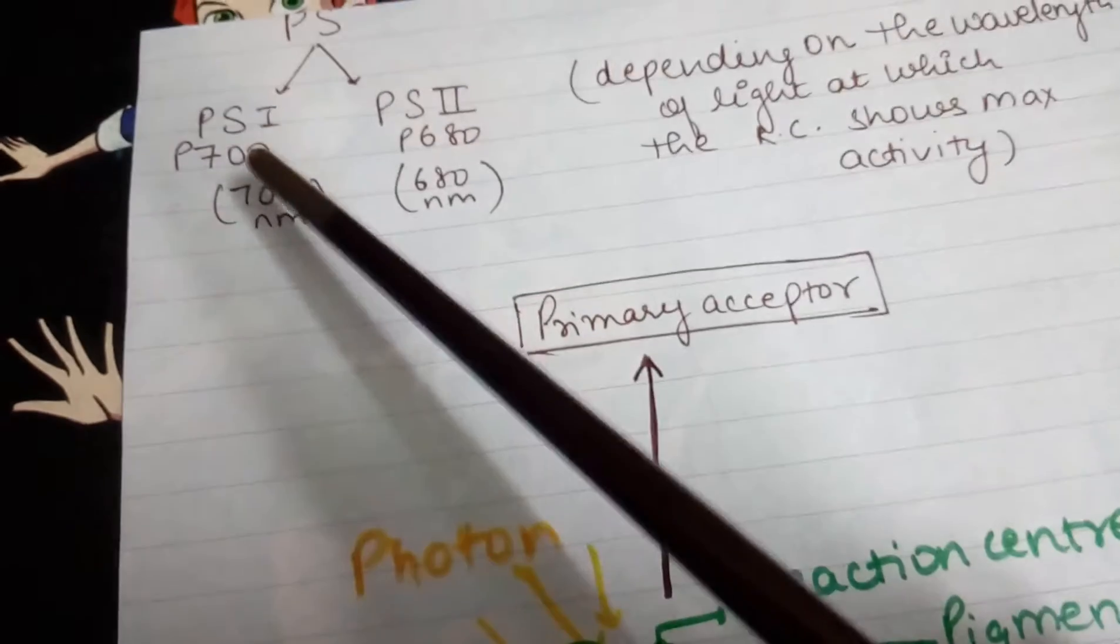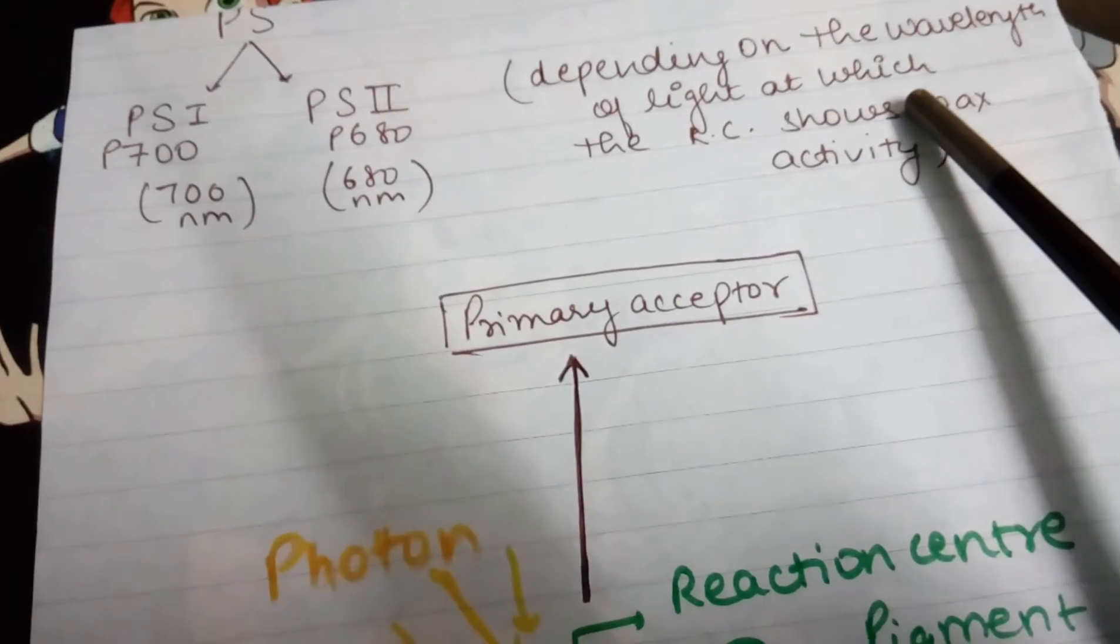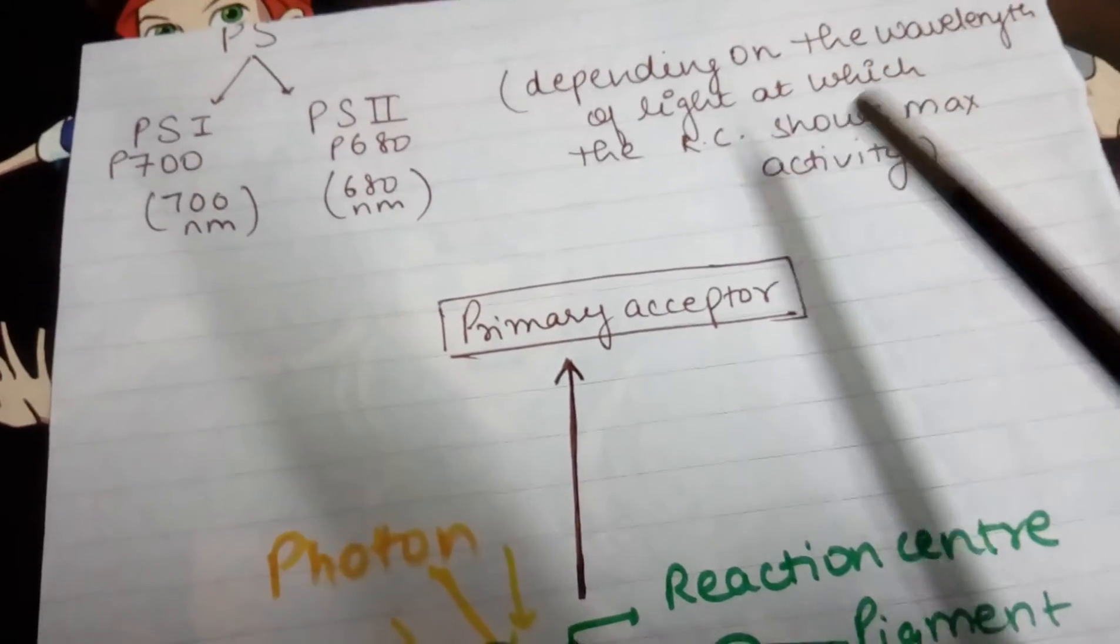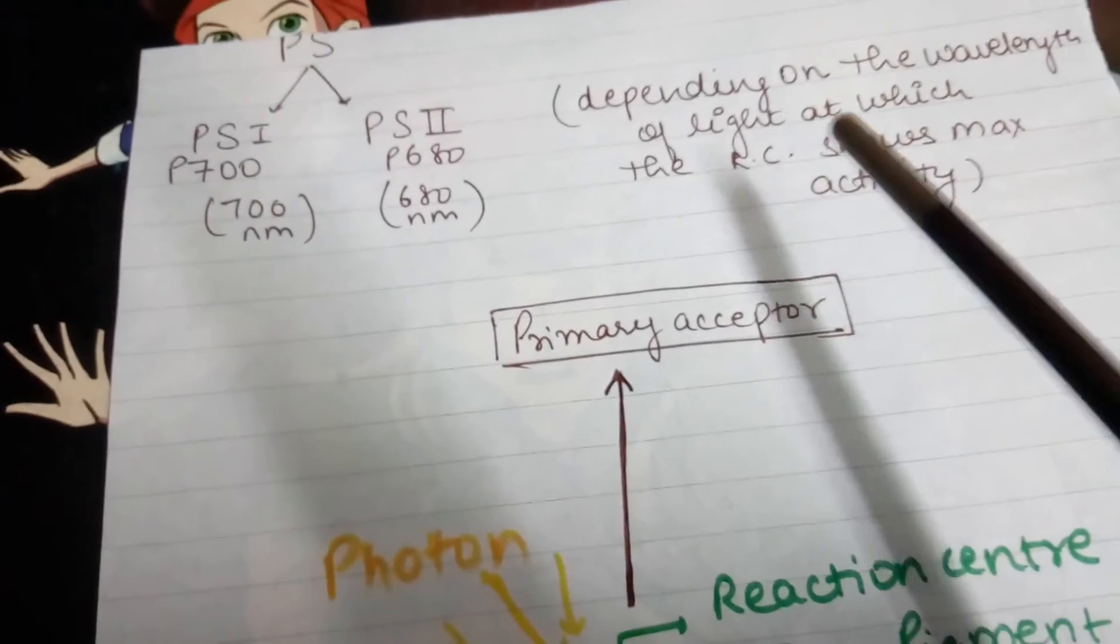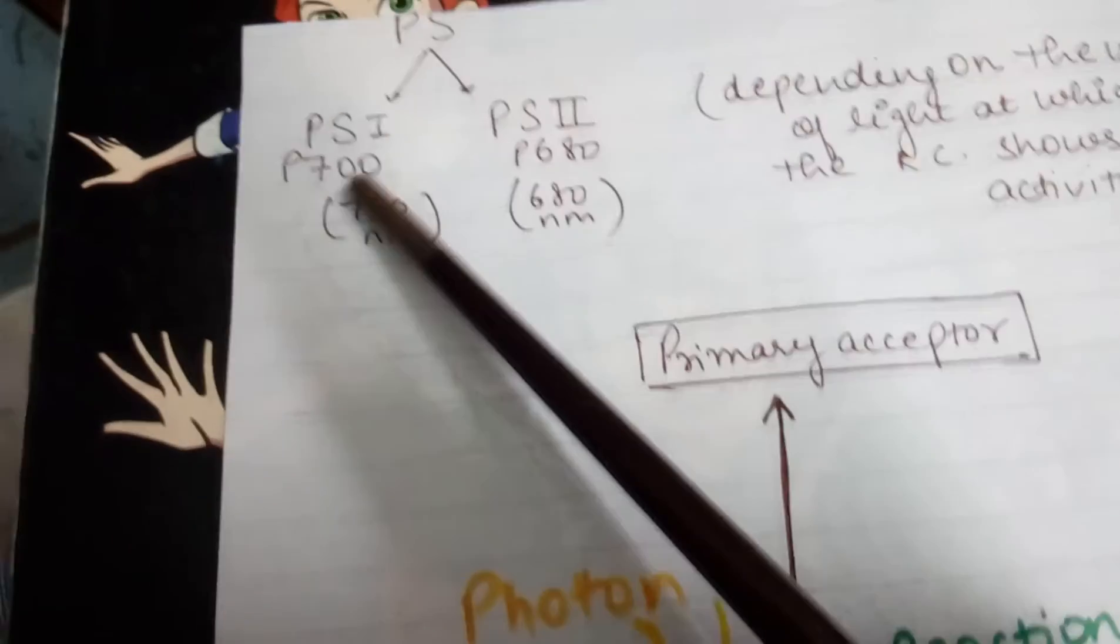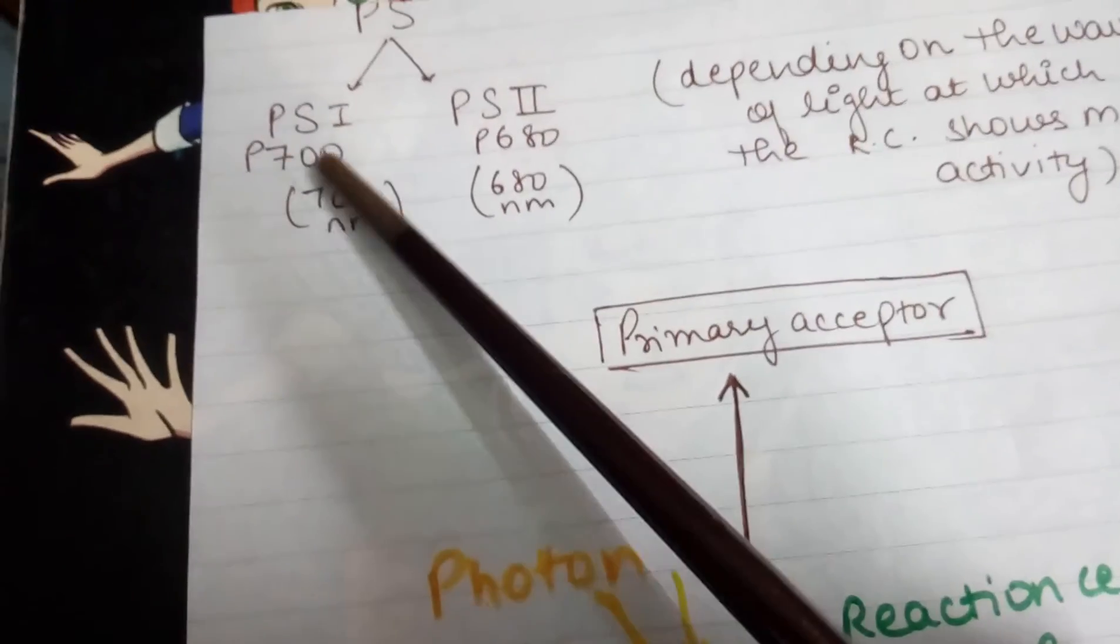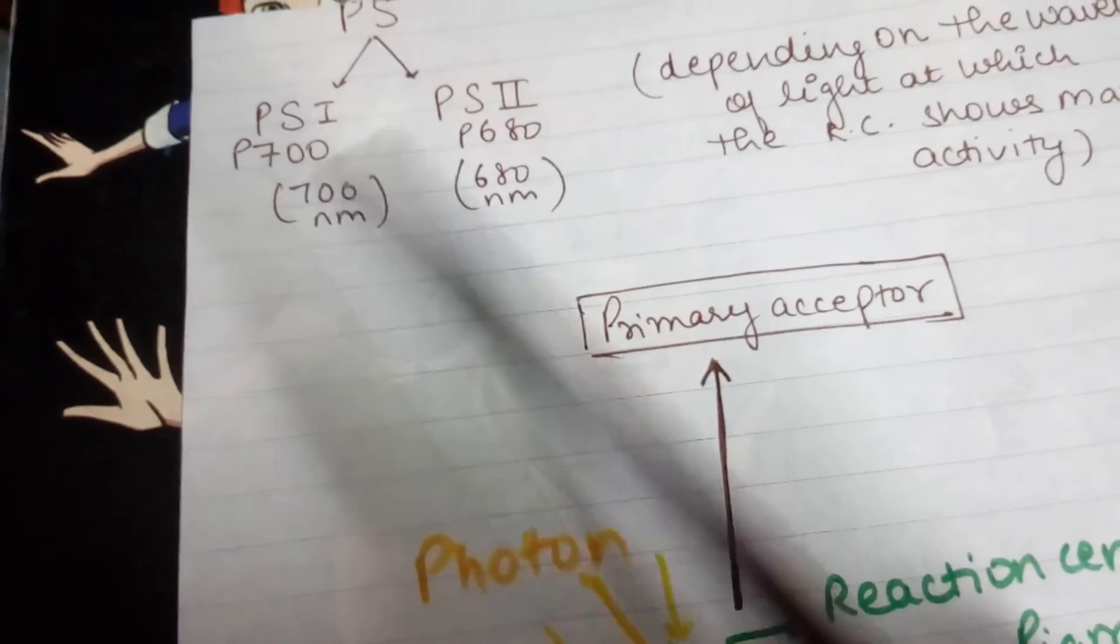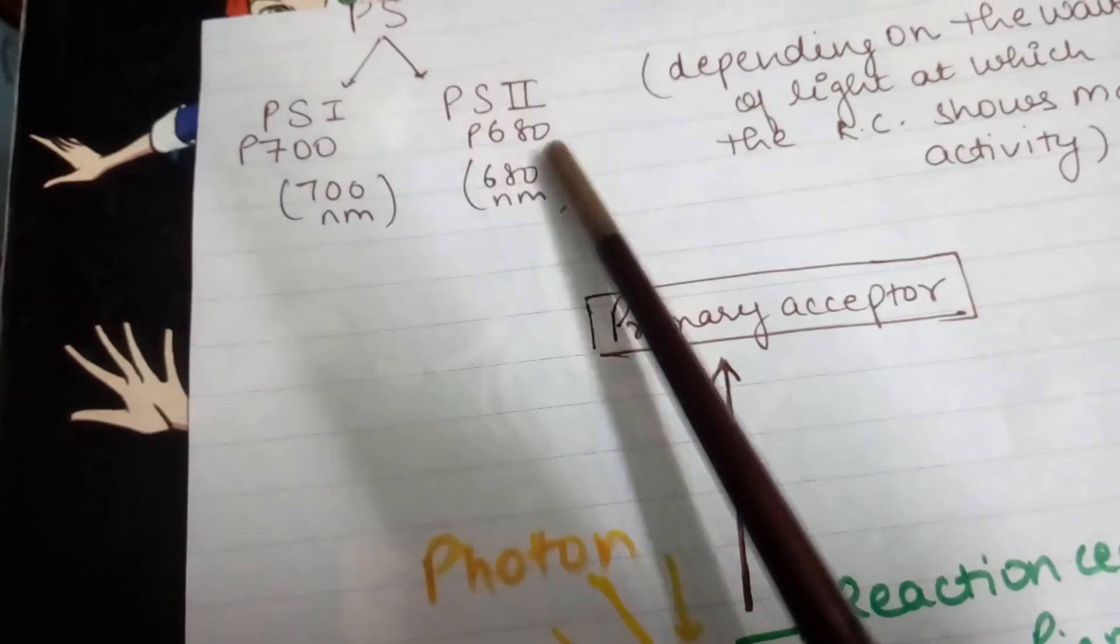Photosystem 1 and photosystem 2 are differentiated based on what wavelength of light produces maximum activity for the reaction center. At which wavelength does the reaction center show maximum absorption and emission of electrons? For PS1 it is 700 nm, so it's also called P700, and for PS2 it's 680 nm, so it's also called P680.